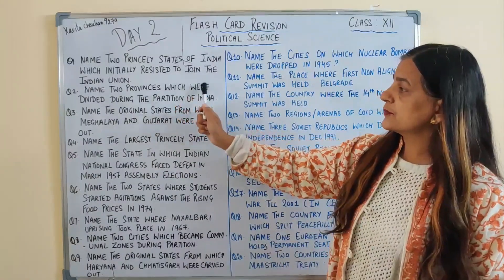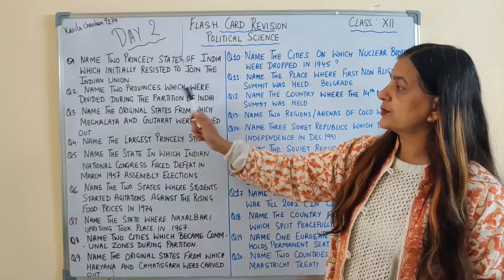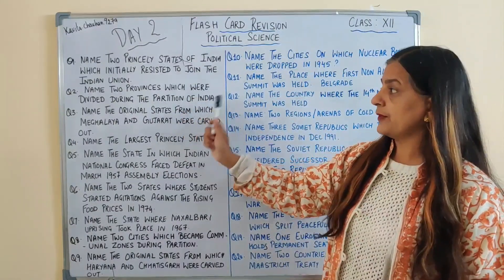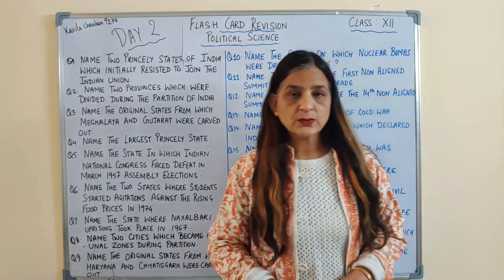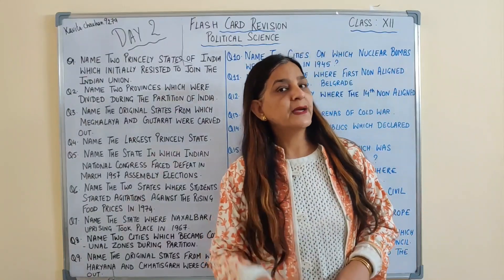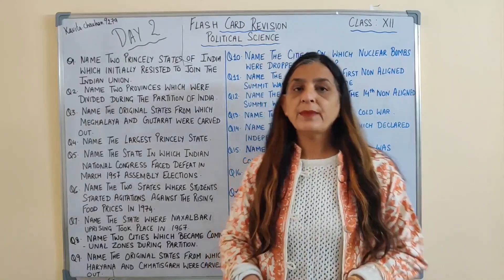Name 2 provinces which were divided during the partition of India, and the answer to this question is Punjab and Bengal.